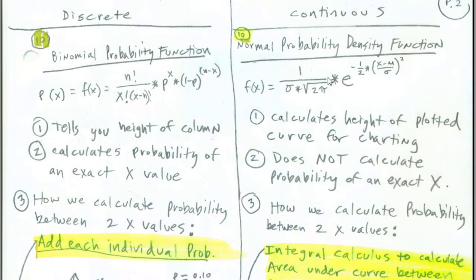Here's for our discrete. Here's for our continuous. We're going to look at two examples, the binomial probability function and for our normal curve, the normal probability density function. Now, whereas this binomial function told us the height of the column, it also calculated the probability of an exact x value.